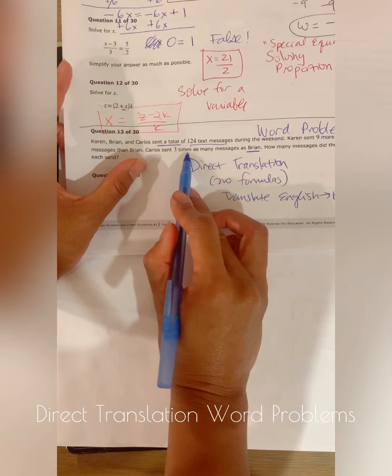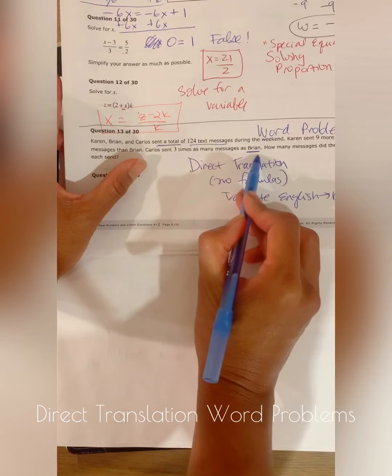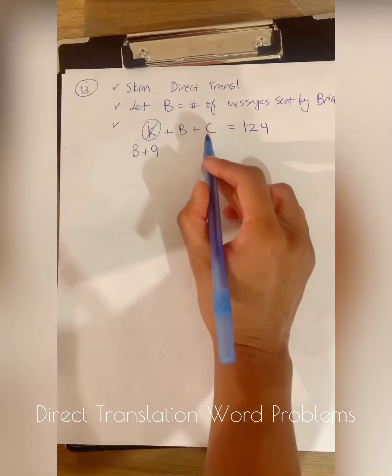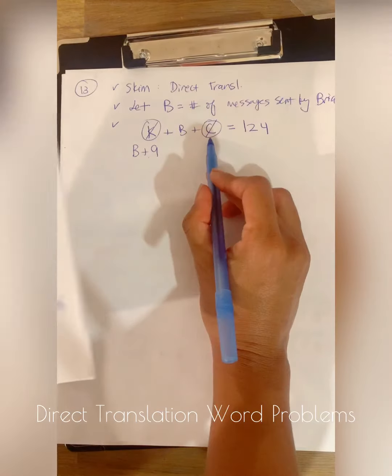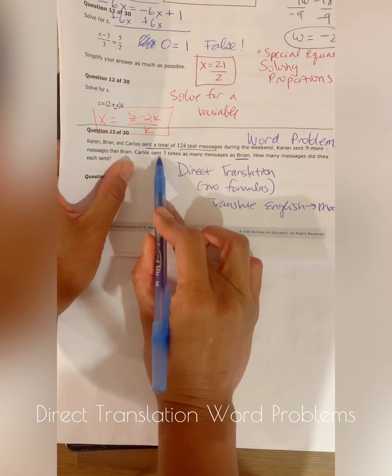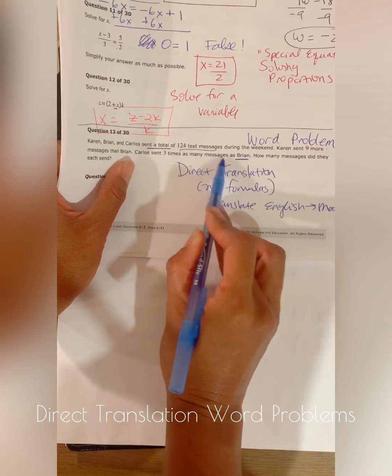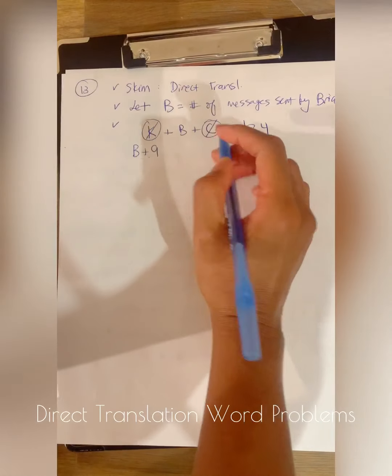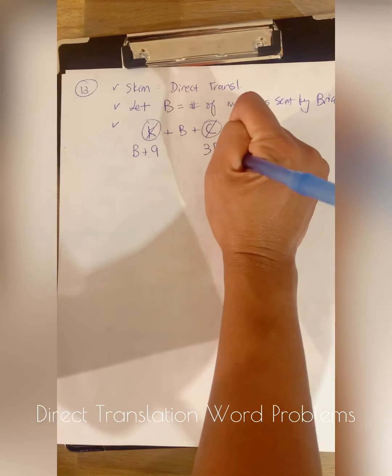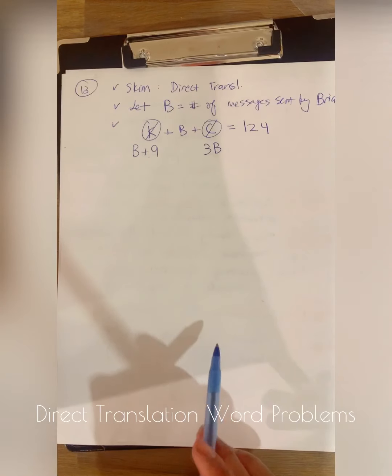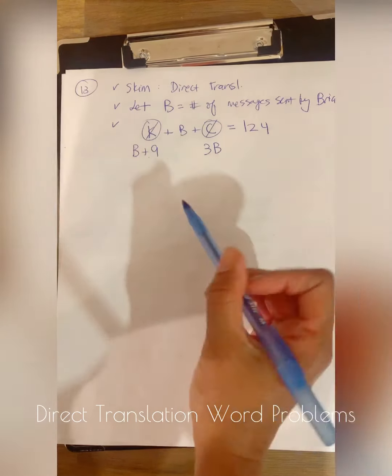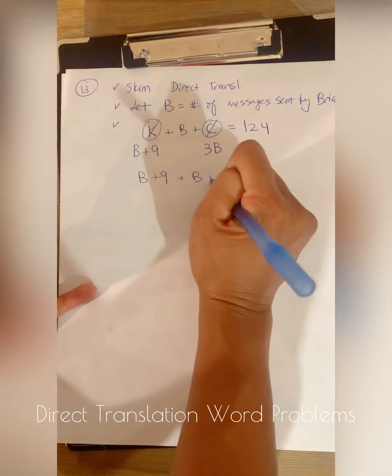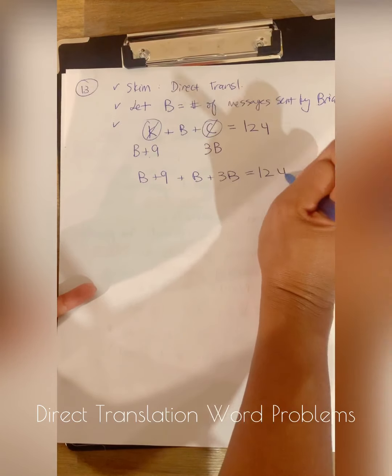Carlos sent three times as many messages as Brian. So here is Carlos. Instead of putting C for Carlos, I know that Carlos sent three times as many messages as Brian. So that's three multiplied by Brian. So this Carlos here, I'm going to put three multiplied by Brian's messages. So now if I rewrote this, I have B plus nine plus B plus three B is equal to 124.